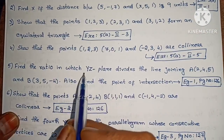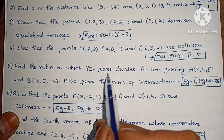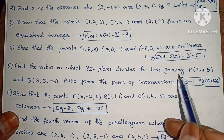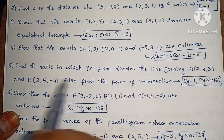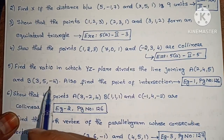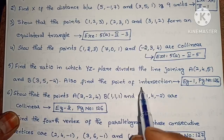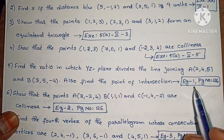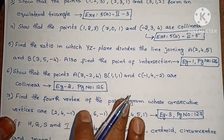Next, find the ratio in which the YZ plane divides the line joining A(-2,4,5) and B(3,5,-4). Also find the point of intersection. Example 1, page number 126.